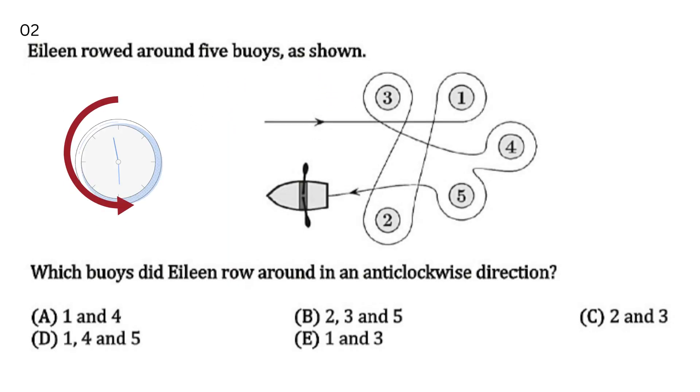Alene rowed around five boys as shown. Which boys did Alene row around in an anti-clockwise direction? Alene rowed her boat around five boys. Which boys did she go around in an anti-clockwise direction?